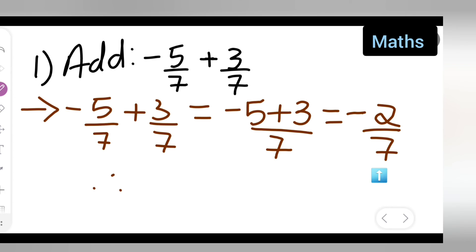Therefore, you can say that negative 5 upon 7 plus 3 upon 7 is equal to negative 2 upon 7, which is your answer. I hope you have understood how to add given fractions, and thanks for watching.